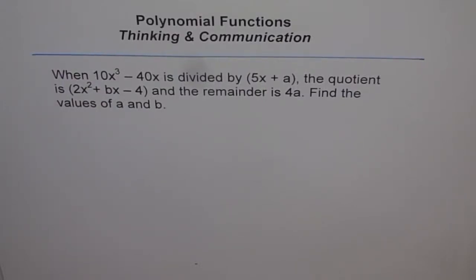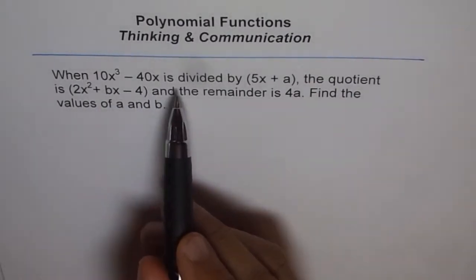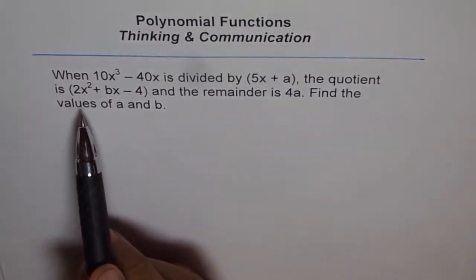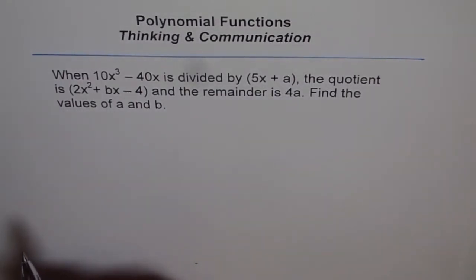Polynomial functions. There is a thinking and communication problem. When 10x³ - 40x is divided by 5x + a, the quotient is 2x² + bx - 4, and the remainder is 4a. Find the values of a and b.